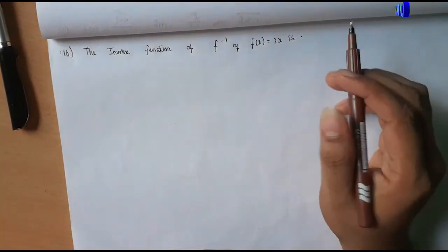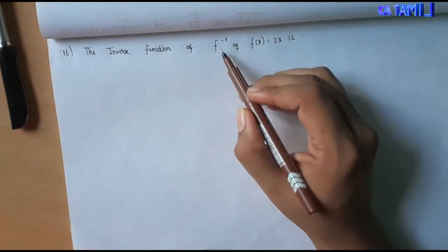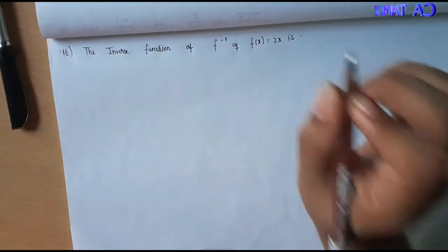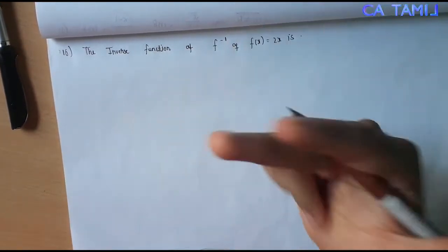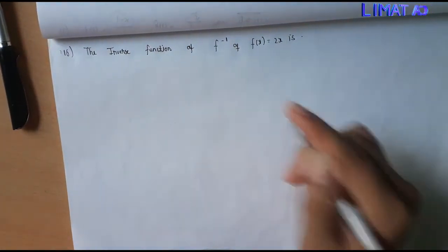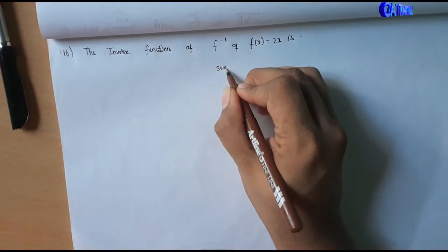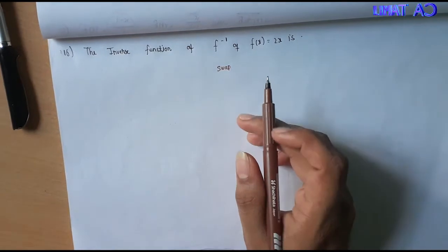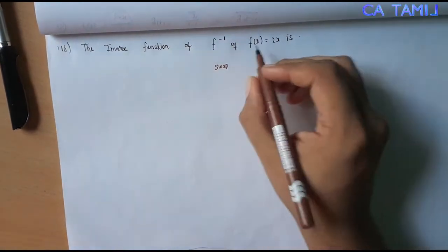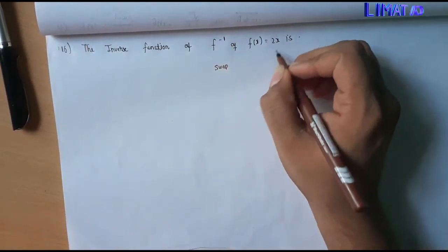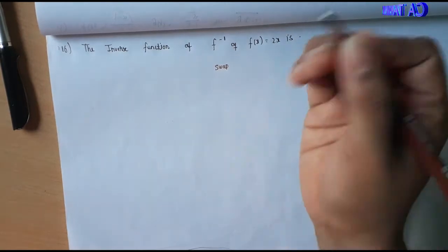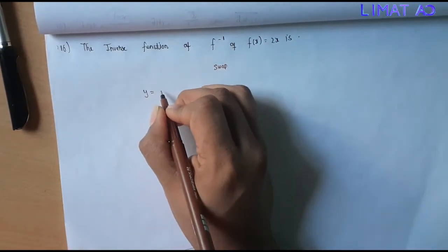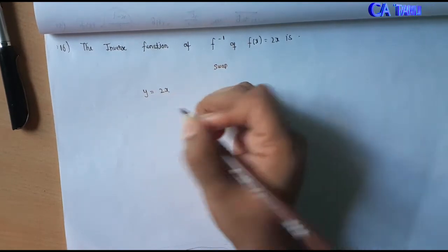Sum number 16. The inverse function of f of x equals 2x. Inverse function — let's look at this. First, there is 2x. So f of x is equal to 2x. Now let's write y: y is equal to 2x.